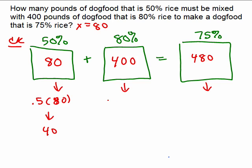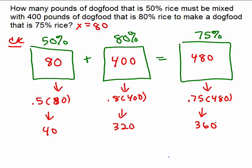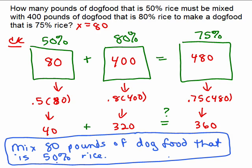In the second bag it's 80% of 400, so 0.8 times 400, that's 320. And in the mixture we want 75%, so 0.75 times 480, which ends up being 360. So the question is: if you have 80 pounds and 400 pounds mixed together, would you have the same amount of rice in the end? Is 40 plus 320 really the same as 360? Yes, it is. So we answer the question: how many pounds of dog food that is 50% rice? It's 80 pounds. Remember to write your answer in words — X isn't necessarily always going to be the answer.